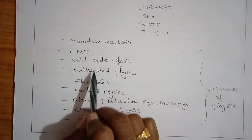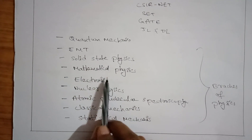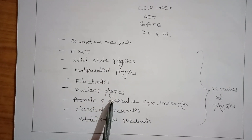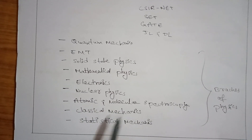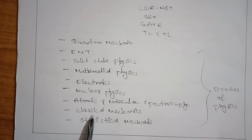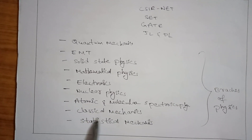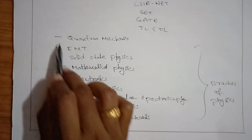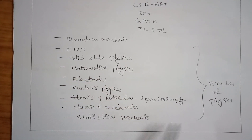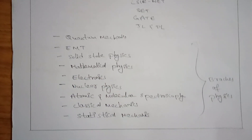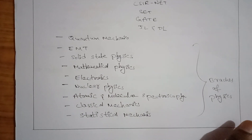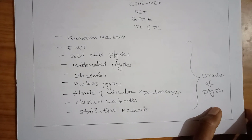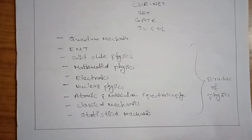In advanced physics we have quantum mechanics, electromagnetic theory, solid state physics, mathematical physics, electronics, nuclear physics, atomic and molecular spectroscopy, classical mechanics, and statistical mechanics. These are the branches of physics, and from today we will learn about mathematical physics.